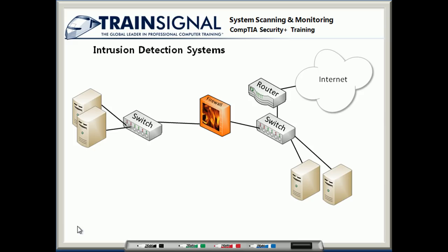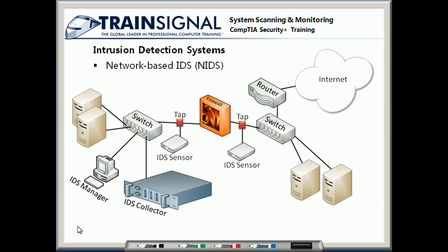To begin with, let's take a look at the Network-Based Intrusion Detection System, or NIDS. Notice that we've installed some components on the network itself. We have these devices called IDS sensors, which gather information off the wire. The way that they gather that information is by being connected to the wire using a device called a tap — it's like a splitter. It allows the traffic to flow across the wire the way it normally would, but at the same time a copy of everything going across the wire also gets sent down to the sensor.